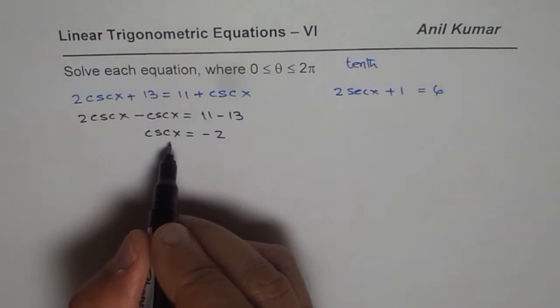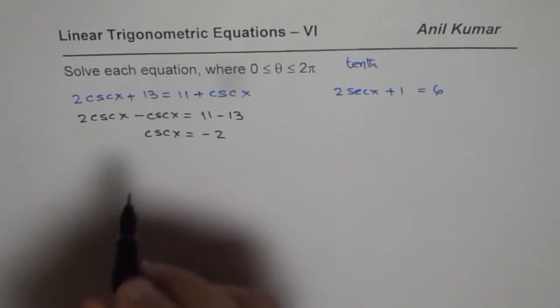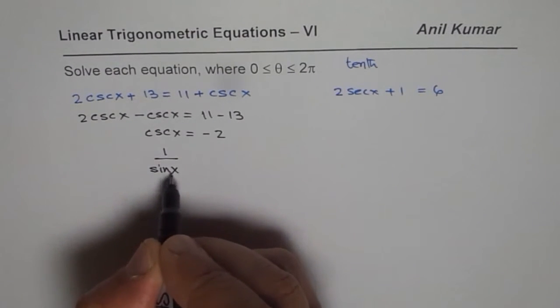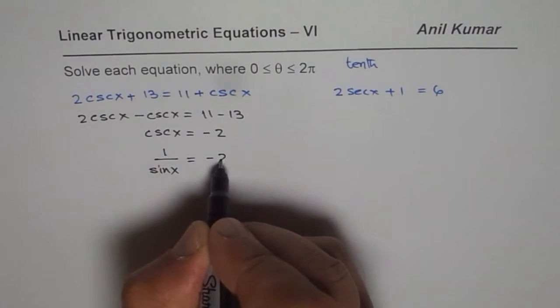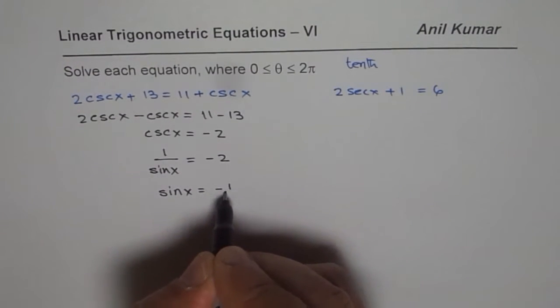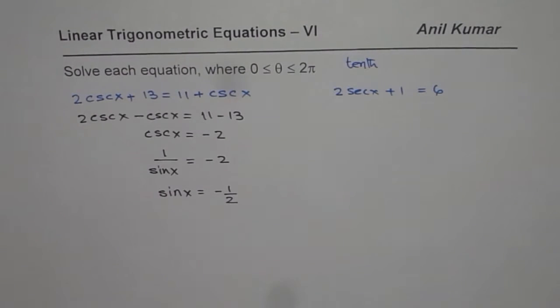Now csc(x) is reciprocal of sin(x), so we could write this as 1/sin(x) = -2, or we could also write this as sin(x) = -1/2.